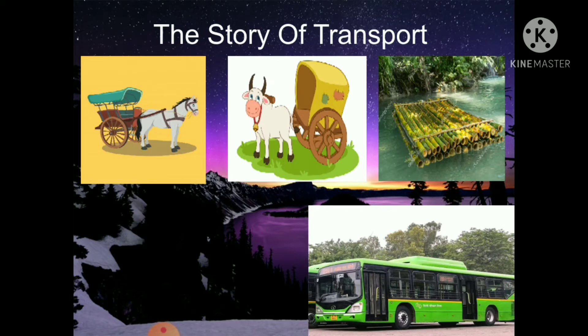Gradually, when the wheel was invented, travel became easier, faster and more comfortable. Carts were made, which were pulled by horses, mules or ponies. Even now, horse carts and bullock carts carry people and goods in villages.